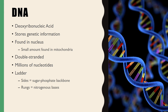Starting with DNA, here are some basic characteristics. DNA stands for deoxyribonucleic acid and the sugar in DNA is deoxyribose. DNA stores genetic information and is mostly found in the nucleus, though a small amount is found in the mitochondria. It is double stranded and generally made up of millions of nucleotides. The structure resembles a twisted ladder, with the rungs representing nitrogenous bases and the sides representing the sugar phosphate backbone.